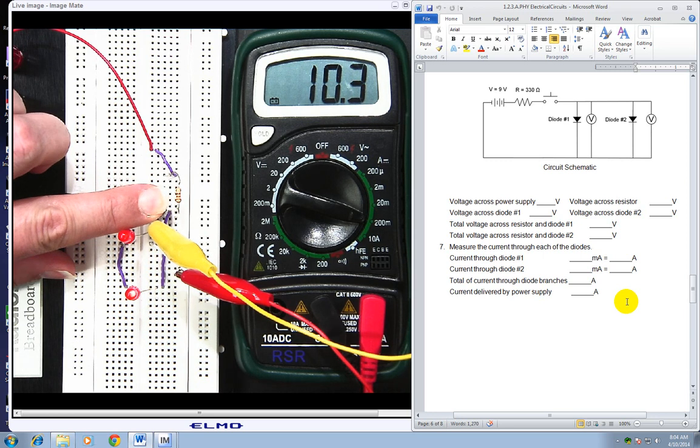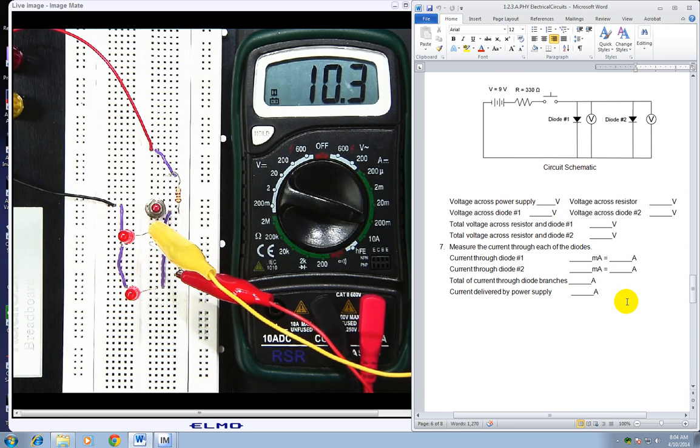So I look at this and I hit the button. Okay, and I get 10.3. I'm going to hit that hold button because I want to be able to release everything and then get my pencil and write that down. All right, so that is through diode one.